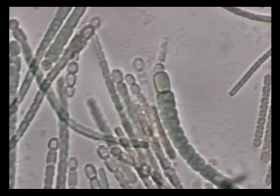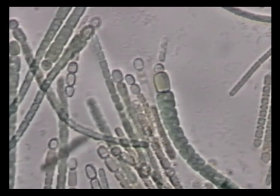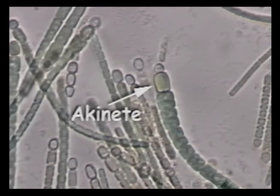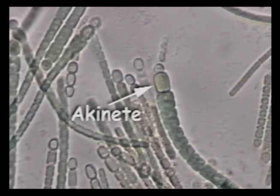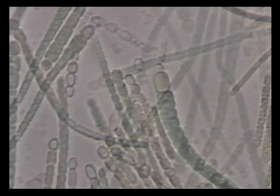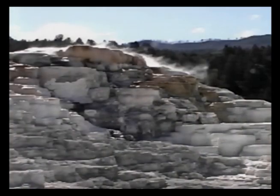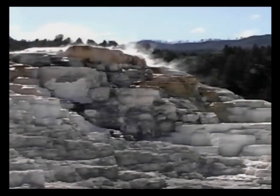Another interesting specialized cell of cyanobacteria is the akinete. An akinete is an enlarged, thick-walled cell which is heat and drought resistant. The akinete cells allow cyanobacteria to survive extended periods under harsh conditions.